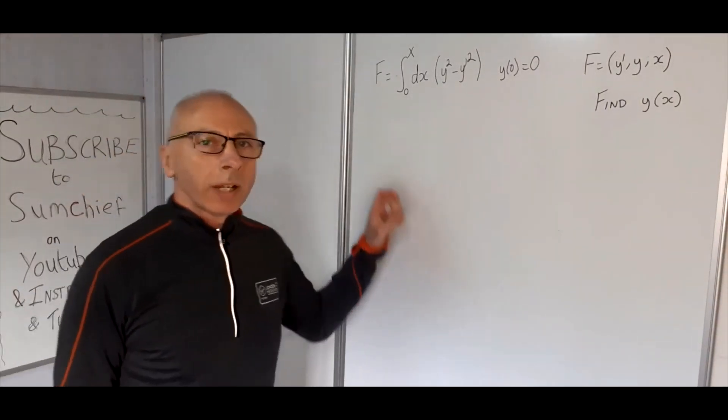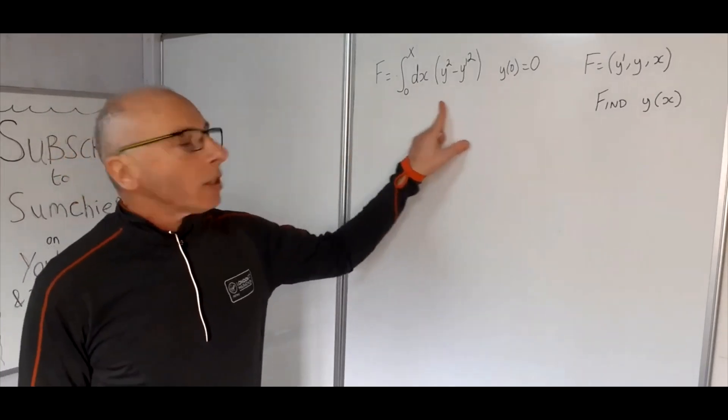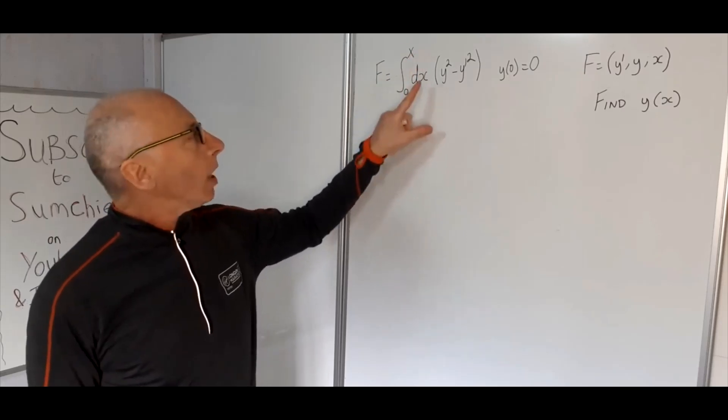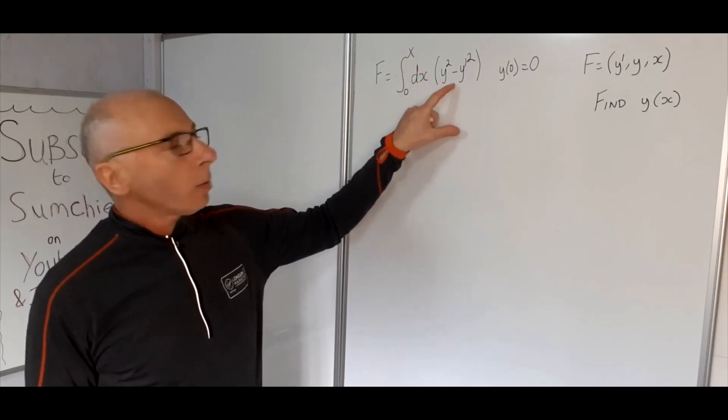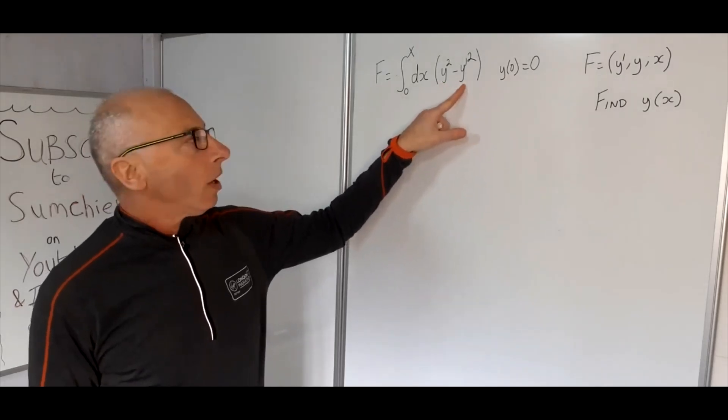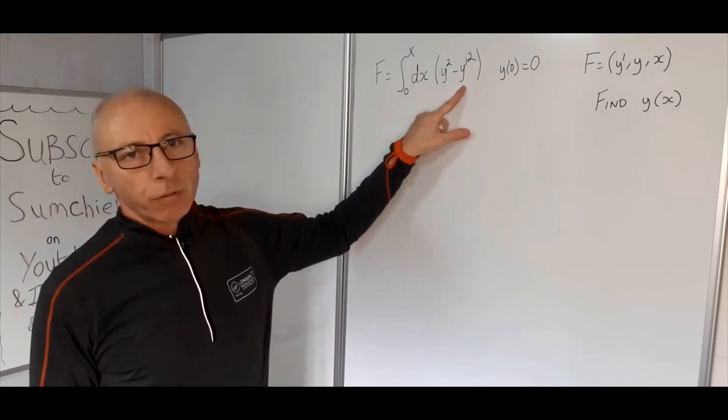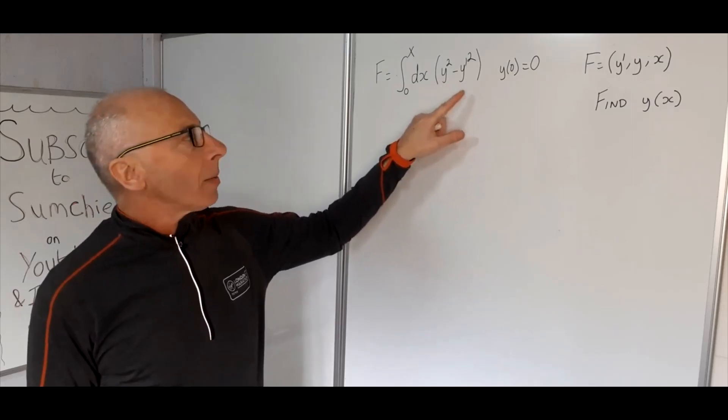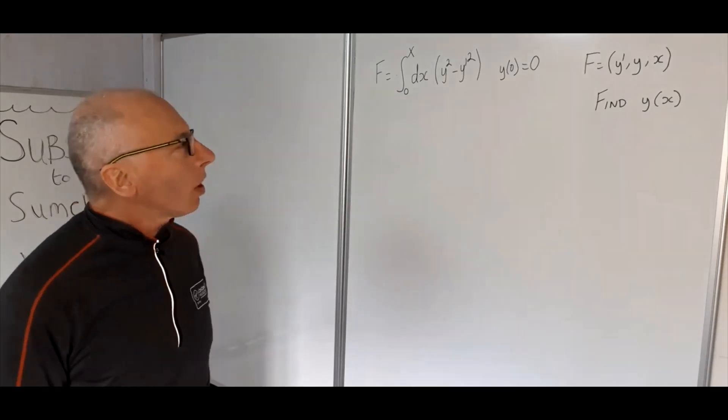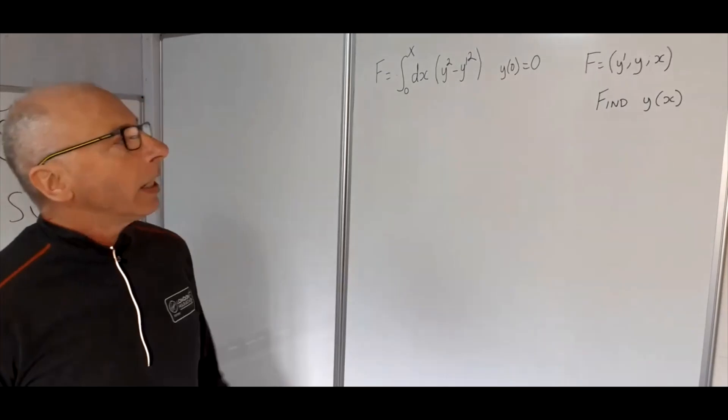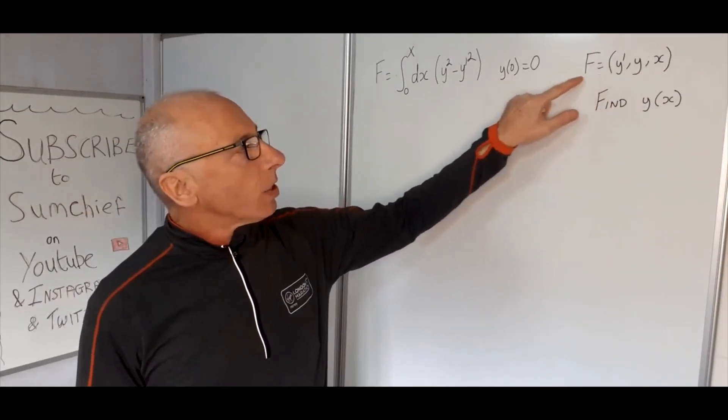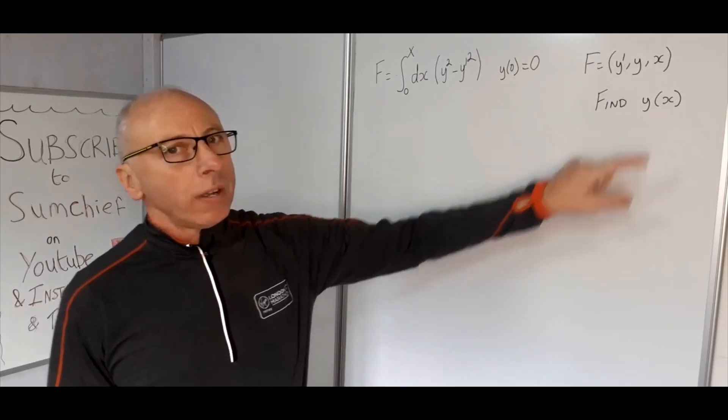Okay, so we look at some multivariable calculus and we've got this functional here which is from 0 to x, which we don't know, with regards to x, y squared and y prime squared. Y and y prime are functions of x and they are individual functions so they are independent of each other. Y of 0 equals 0 is the only information that we've got for y. The functional is y prime, y, and x—these are what it's made up of—and we're looking to find y of x.